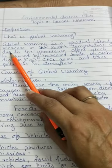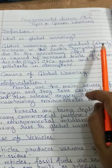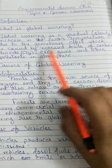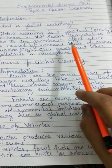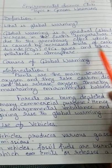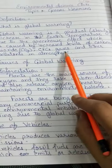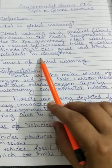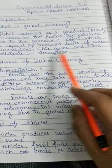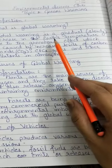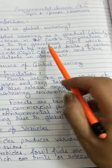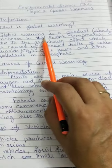Global Warming is a gradual or slow increase in Earth's temperature due to the greenhouse effect, which is caused by increased levels of carbon dioxide, CFC gases and other pollutants in the atmosphere. Due to the increase in these types of gases and other pollutants, the temperature of the Earth is increasing day by day. That increase in temperature is called Global Warming.